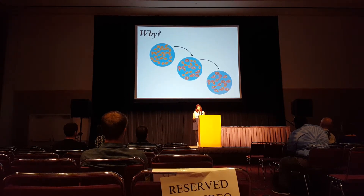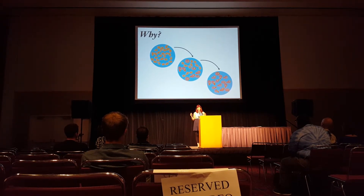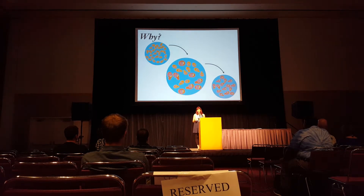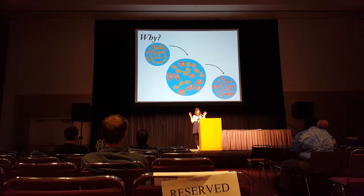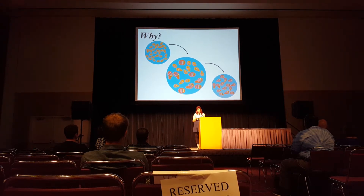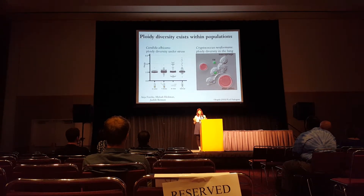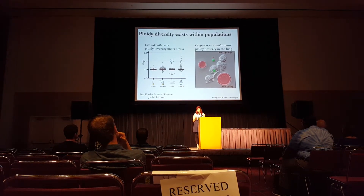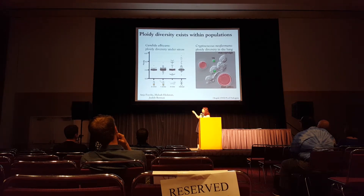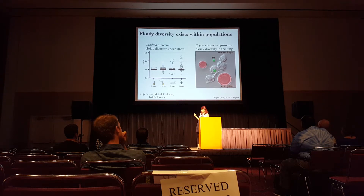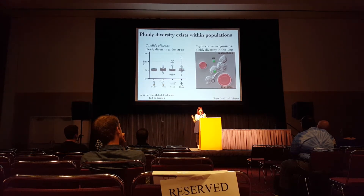Why is this happening? If we think about ploidy transitions — we start with a population of haploid cells and they end up diploid — there's an intermediate time point where both haploid and diploid coexist. We know diploid is going to take over, so you might think the diploids are just better. They arise in a haploid background and then take over because they're simply fitter. We know that ploidy diversity does exist within natural populations. In Candida albicans in lab test tubes they're mostly diploid, but as soon as we add a stressor, put them through mice, or sample clinical isolates, we do see variation in ploidy occurring.